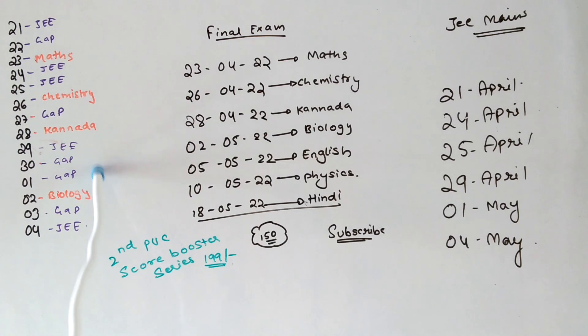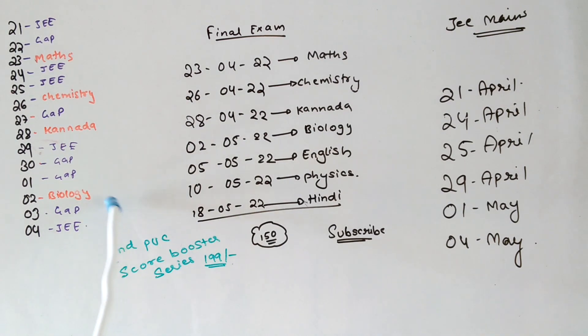30 and 1st is a gap. 2nd is biology. 3rd is the last attempt. That is 4th May.